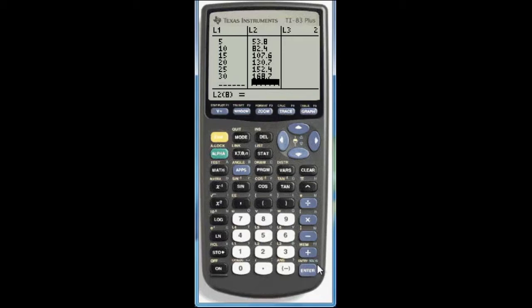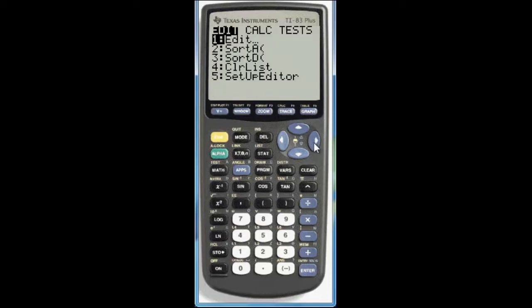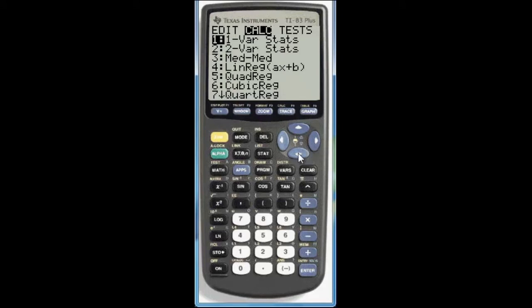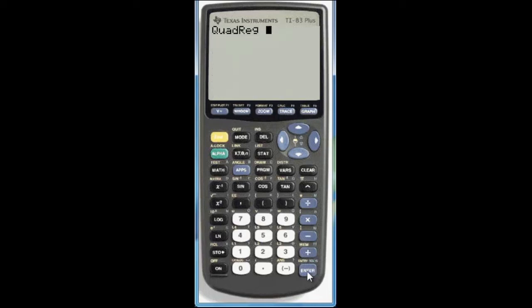Now in this exercise it gives you the form. y equals at squared plus bt plus c. Your calculator will use x instead of t. But essentially it will be the same form. And again that's quadratic. So you will go to stat. Scroll over to calc. And then go down to choice five which is quadreg. Or reg which stands for quadratic regression. Hit enter.